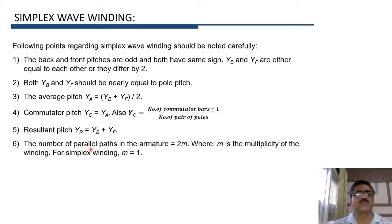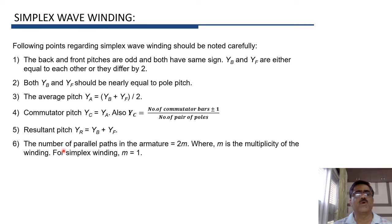The number of parallel paths in case of wave winding is equal to 2M, where M is the multiplicity of the winding. In case of simplex wave winding, M = 1, so the number of parallel paths in the armature is equal to 2. If the winding is duplex, M = 2, and so on.